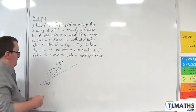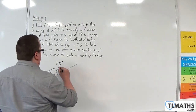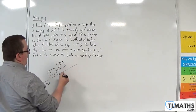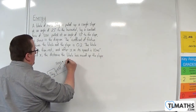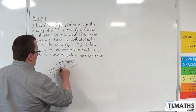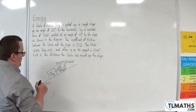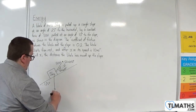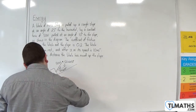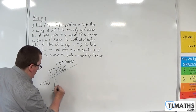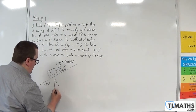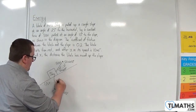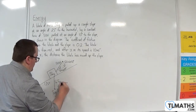Let's annotate this diagram. First, I'm going to complete the triangle for the components of the 50 newton force: that's going to be 50 sine 10 degrees and 50 cosine 10 degrees. Now the weight of the block will be 5g. Let's complete that triangle too — that's going to be 25 degrees, so this is 5g sine 25 degrees, and this will be 5g cosine 25 degrees.